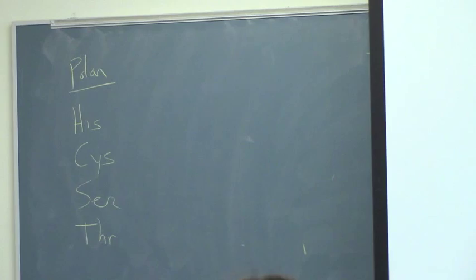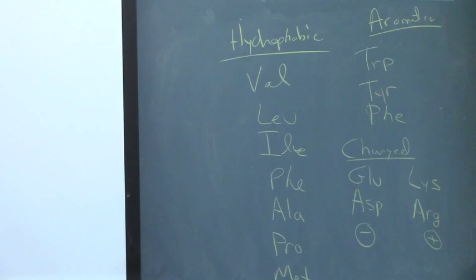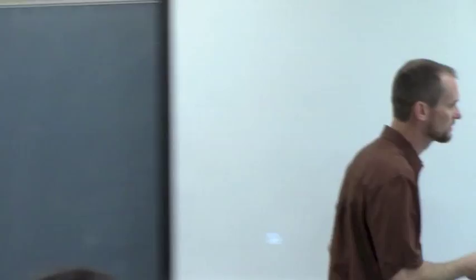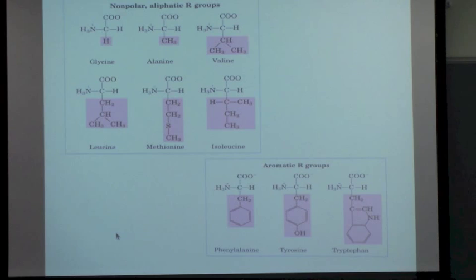We're missing a few - threonine, asparagine, glutamine. Where do we put glycine? I don't know, it could be hydrophobic or polar. It's got a CH2. Glycine is the lack of a side chain - we just have a hydrogen.